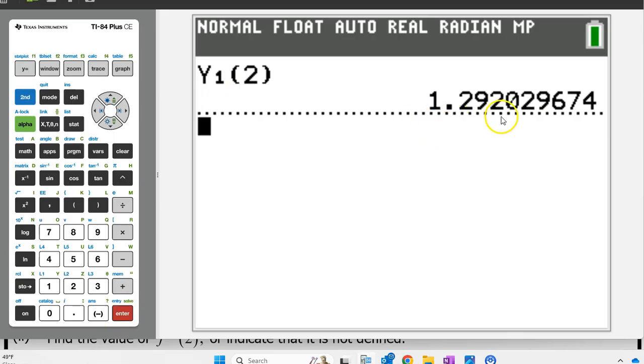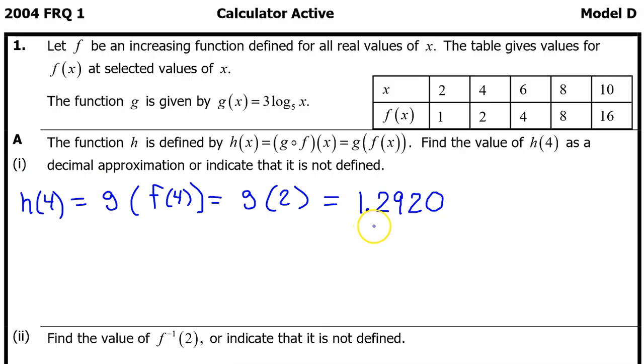Always use 4 decimal places and never try to round. The College Board will accept 3 decimal places, but we have found that students often make a mistake trying to round and they lose a point needlessly. So use 4 decimal places and never round. 1.2920. That's it for A part 1.